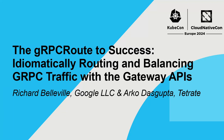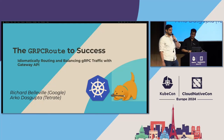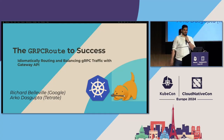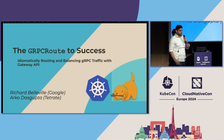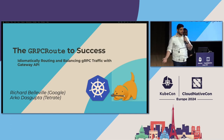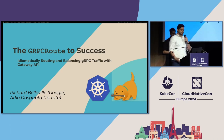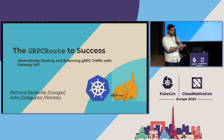The gRPC route to success. My name is Arco Dasgupta. I'm a software engineer at Tetrade and a maintainer on the Envoy Gateway project. And I'm Richard Belleville from the gRPC team at Google. This talk is about the new gRPC route resource, part of the Gateway APIs. This presentation is a special milestone for gRPC route because after two years, it is finally heading to v1. We are excited for it to make its way into the hands of a bunch of people in the near future, hopefully some of you.